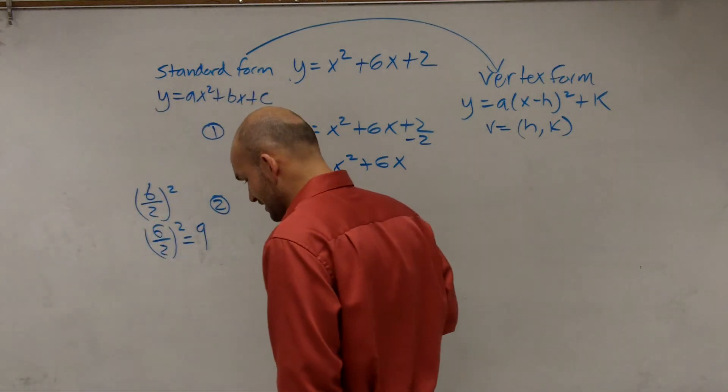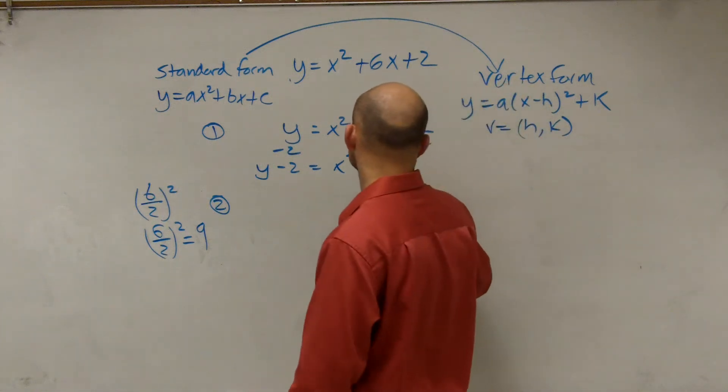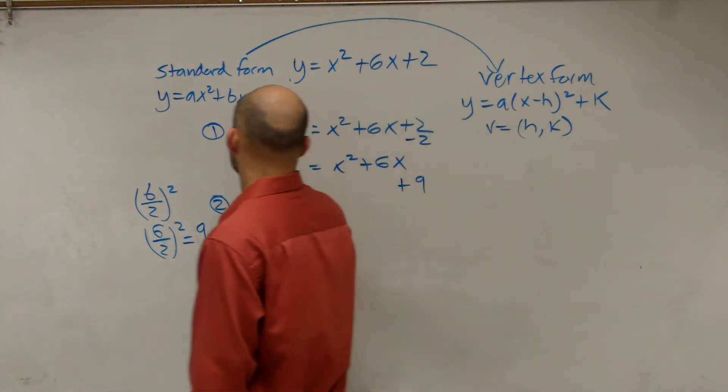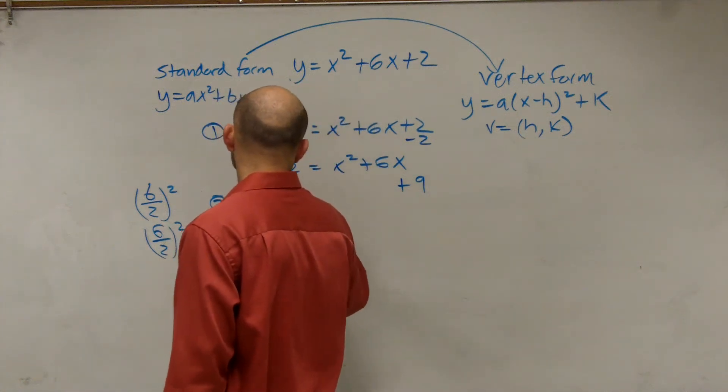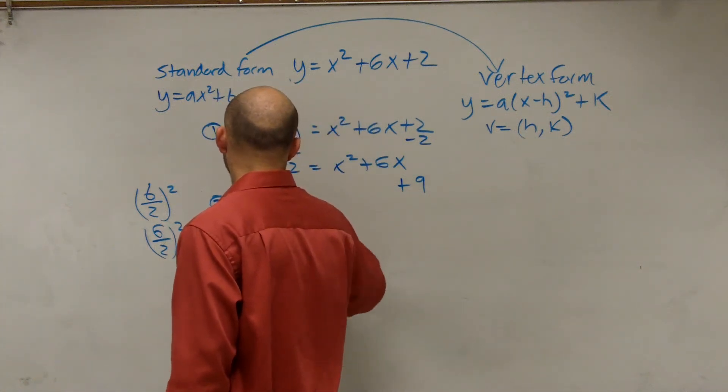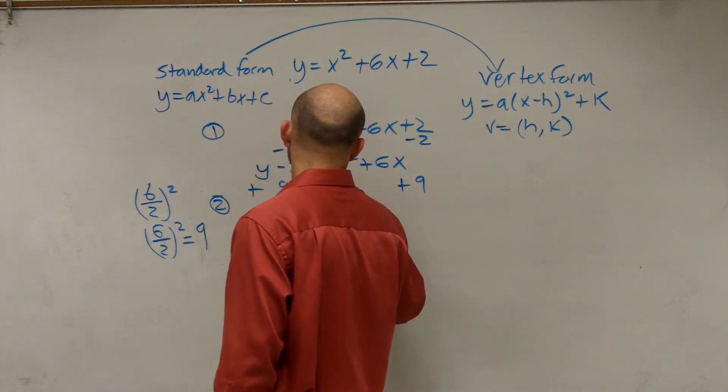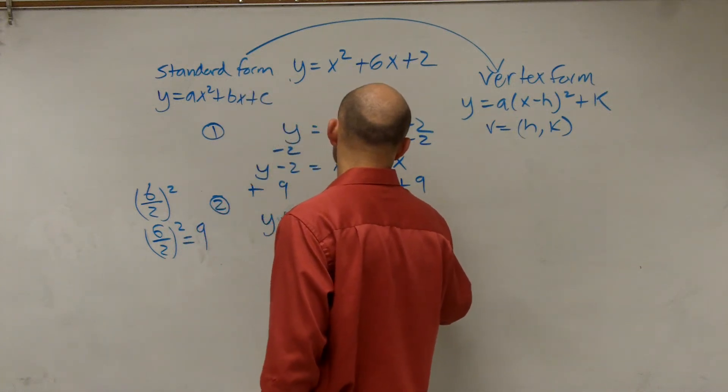So therefore, I'm going to make sure that I add 9 to both sides. Therefore, now I have y equals, I'm sorry, y plus 7 equals x squared plus 6x plus 9.